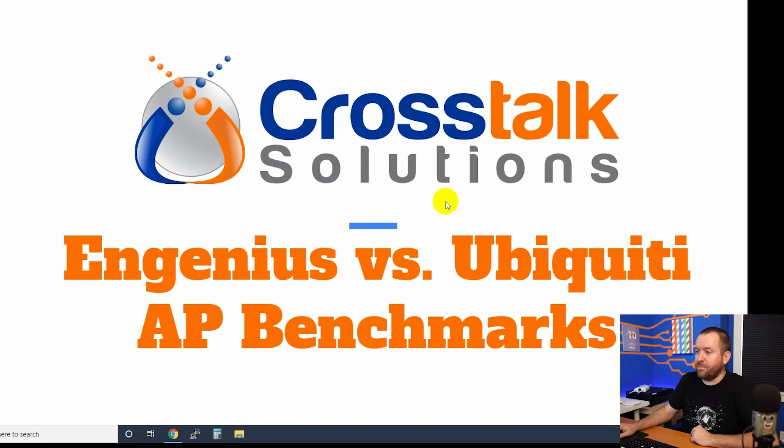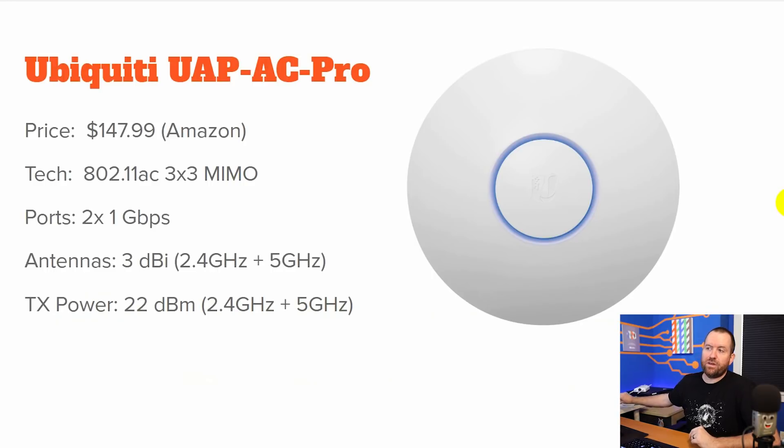Without further ado, let's go ahead and get into the benchmark testing. Contender number one is the Ubiquity UAP-AC Pro. This is kind of the old standard access point. I have deployed literally hundreds of these. The price on this access point is $147.99.